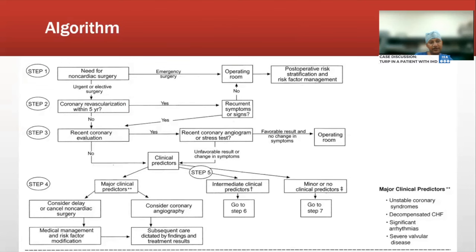If new symptoms are present, we assess whether a recent coronary evaluation has been done. If an angiogram or stress test shows favorable results with no change in symptoms, the patient can proceed. If results are unfavorable or new symptoms have developed, or if no recent evaluation was done, we assess clinical predictors: major, intermediate, or minor. Major clinical predictors — such as unstable coronary symptoms, decompensated congestive heart failure, significant arrhythmias, or severe valvular disease — require consideration or cancellation of the non-cardiac surgery, with medical management and subsequent care dictated by findings. Coronary angiography may also be necessary.